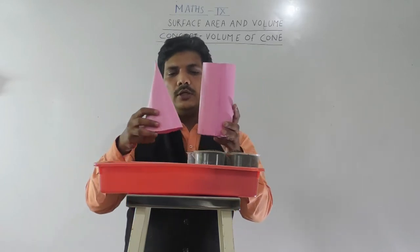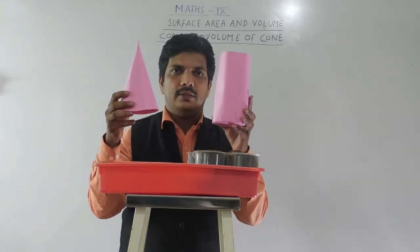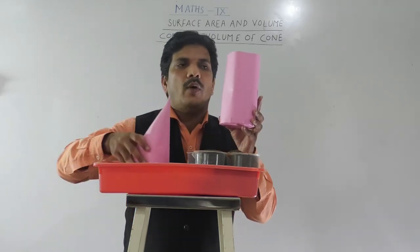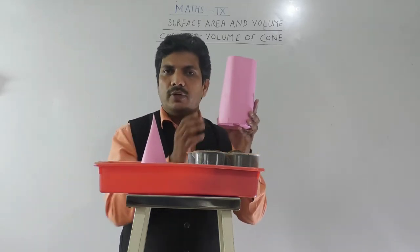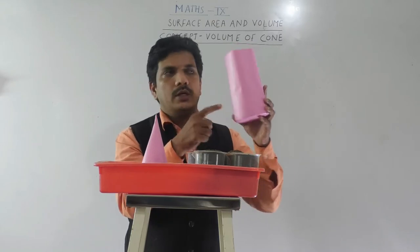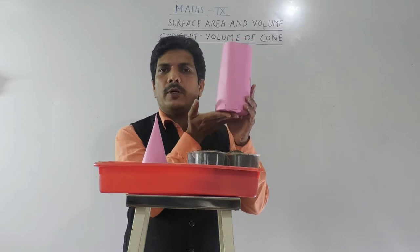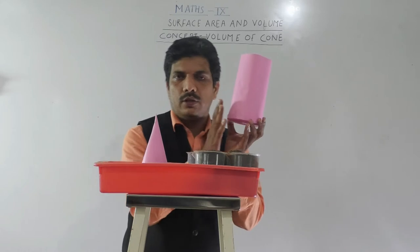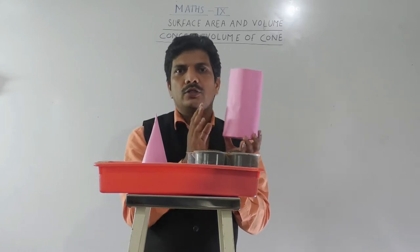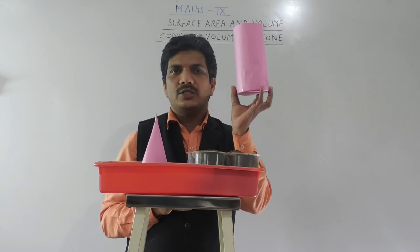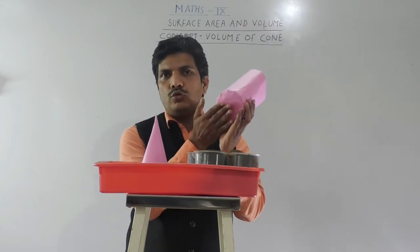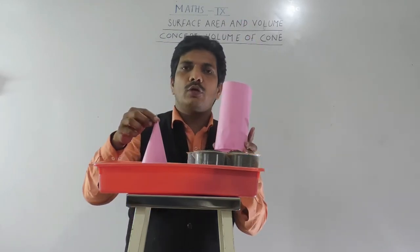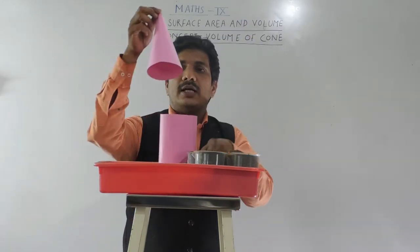If you observe here, the height of both the cylinder and the cone is the same. Why is it called a right circular cylinder? The height of the cylinder is perpendicular to the base, so it is known as a right circular cylinder. We have studied its volume and total surface area. This right circular cone is closed from one side and open from the top.